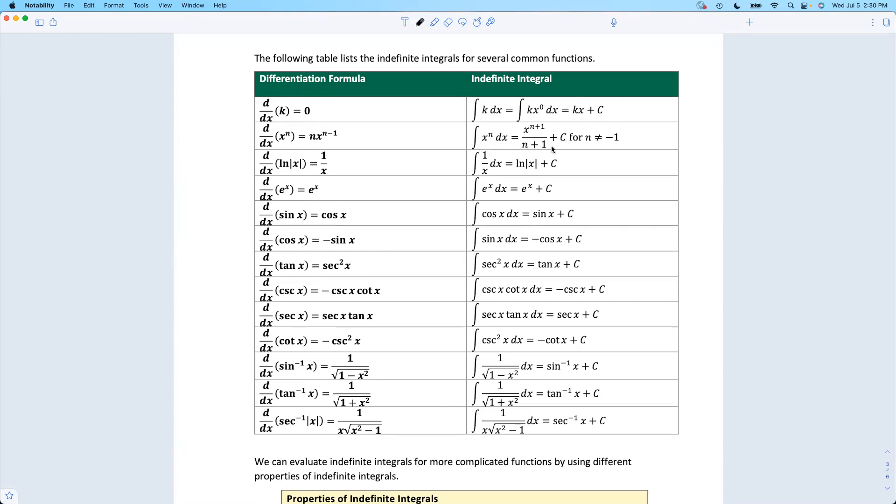Here is our power rule for antiderivatives. Instead of multiplying by the old exponent and subtracting one, when we go backwards, we add one to the exponent and then divide by the new exponent. A lot of mistakes happen right here. You just got to work a bunch of these and practice this.